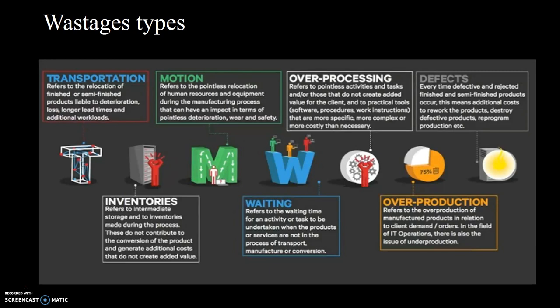In industrial practice, we classify wastages into seven categories, remembered by the acronym TIMWOOD: Transportation waste, Inventory waste, Motion waste, Waiting waste, Over-processing, Over-production, and Defects. These different types of wastages accumulate in a product as it converts from input to output. For example, when a worker carries materials from one place to another, it consumes too much time. When planning a layout design, we can position things to reduce motion or transportation waste.